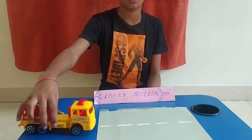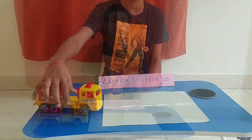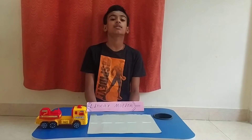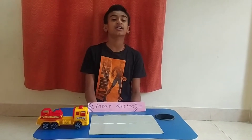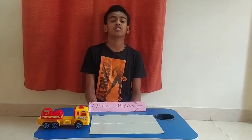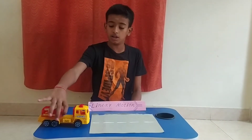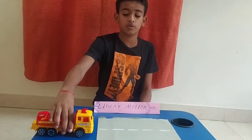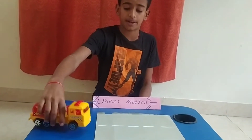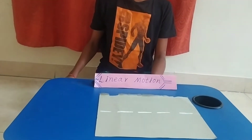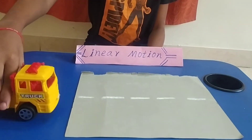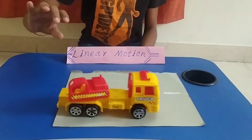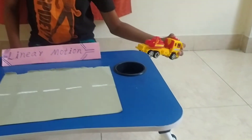This is the working model of linear motion. Linear motion means an object which moves in a straight path. This is a truck. This truck is going to move in a straight path. See, it moved in a straight path.